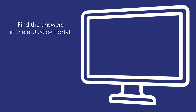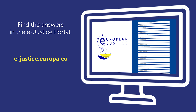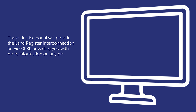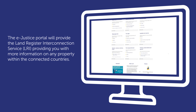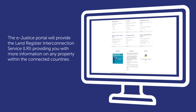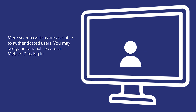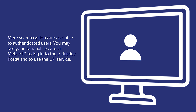Find the answers in the eJustice Portal at ejustice.europa.eu. The eJustice Portal will provide the Land Register Interconnection Service, giving you more information on any property within the connected countries. More search options are available to authenticated users.